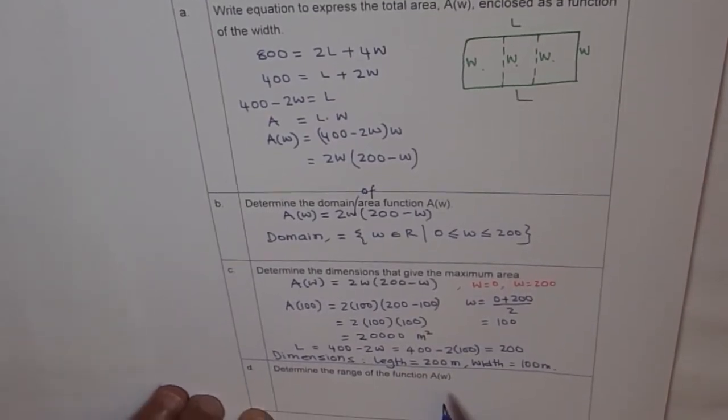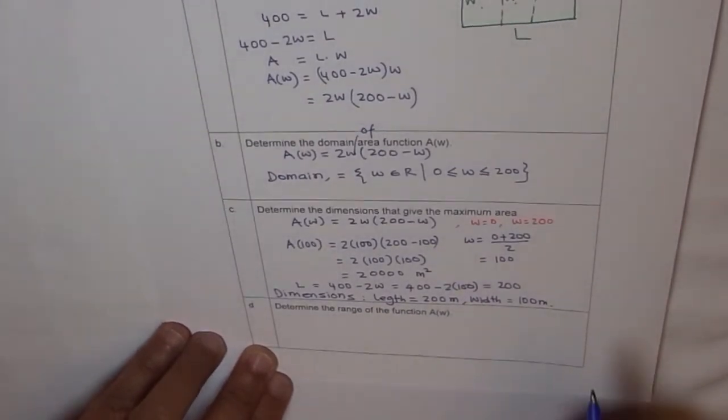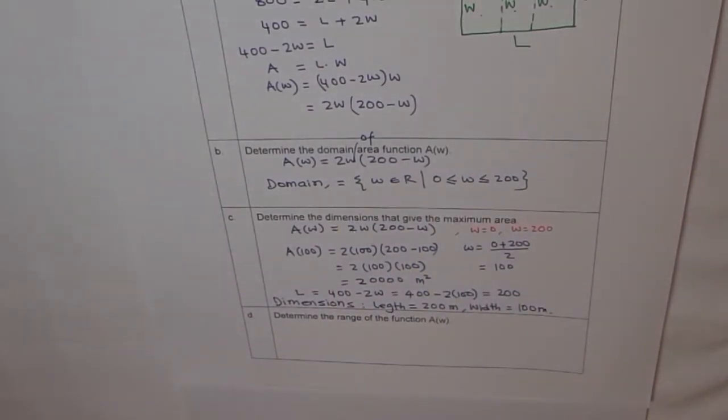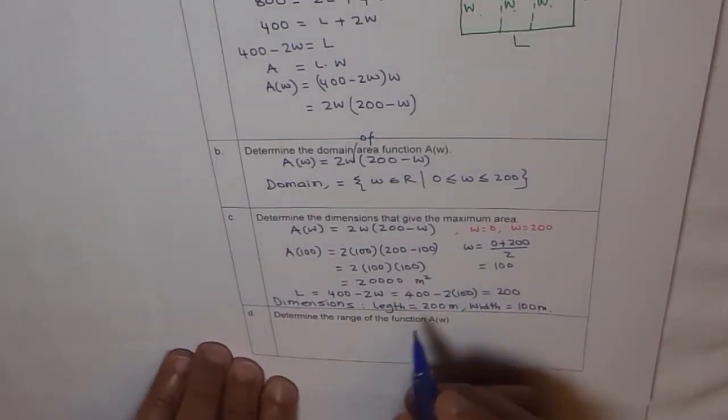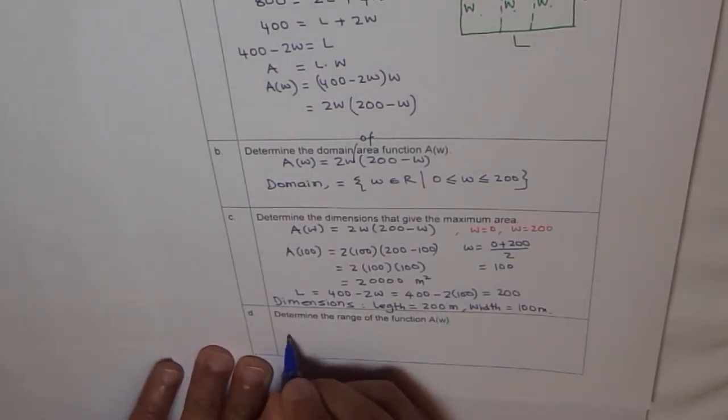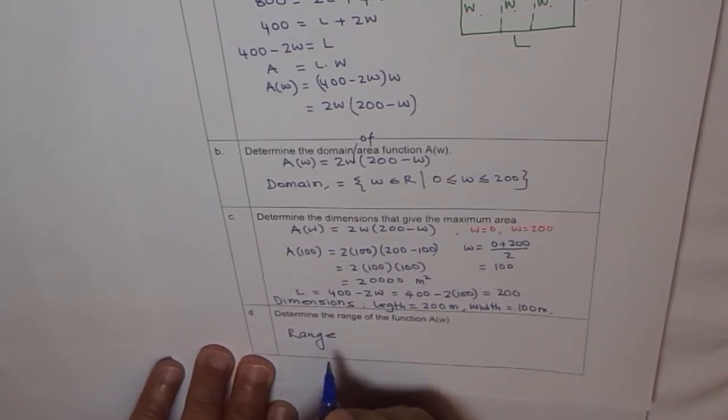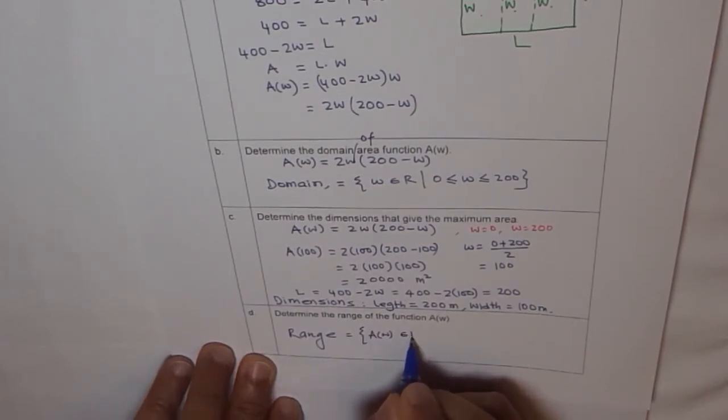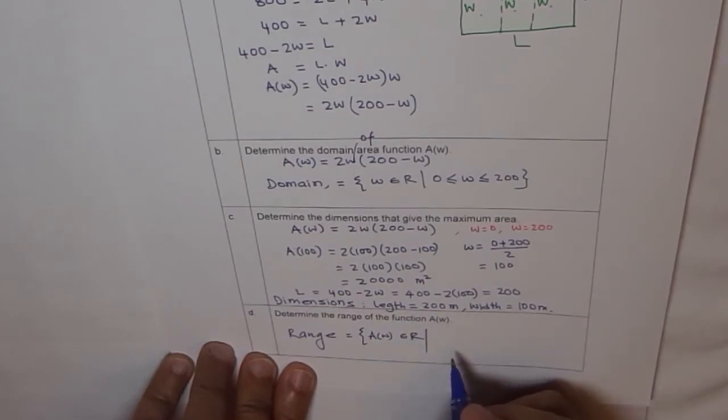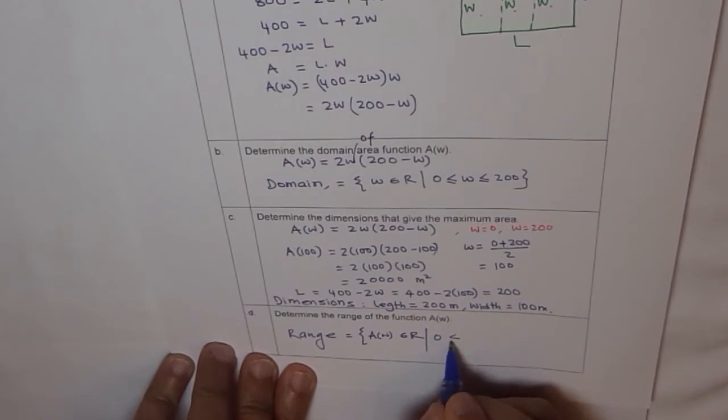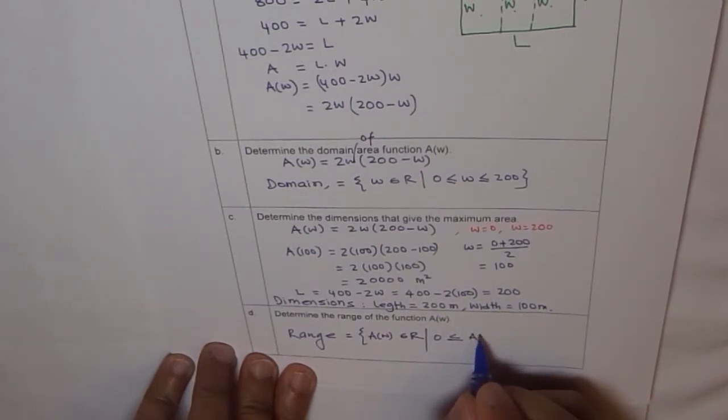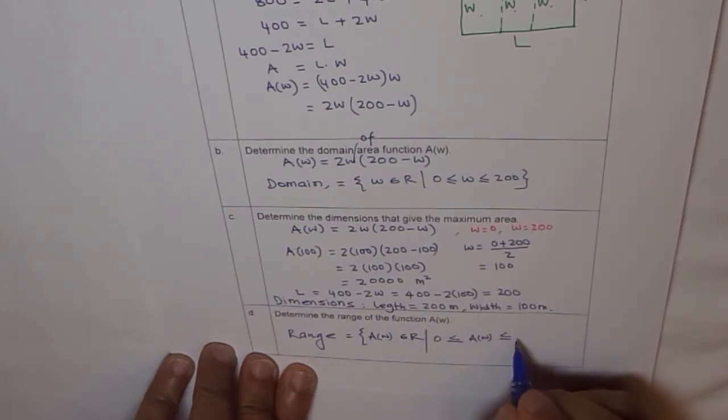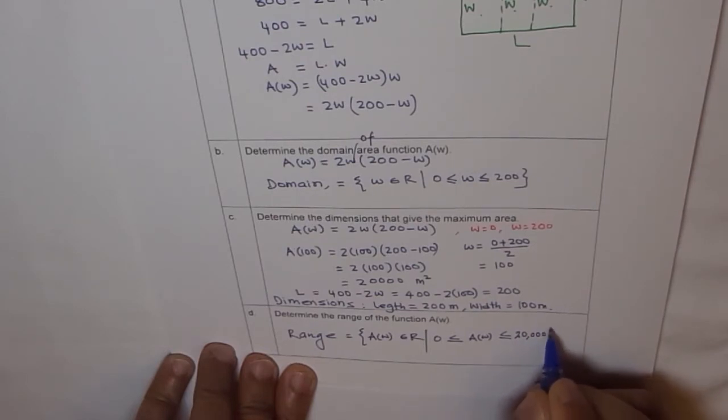Now, the last part is determine the range of the function A(W). So ranges from minimum to maximum area. Now, for our function, the maximum could be 200. So we get range which we just calculated. Of area. Let me write range A(W) belongs to real numbers, areas between 0 and 200,000.